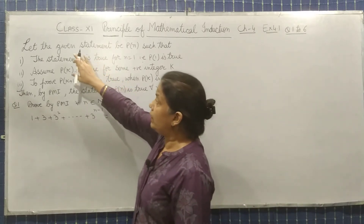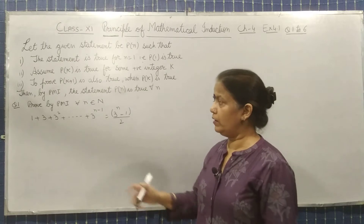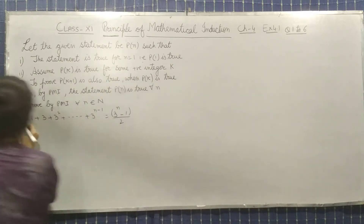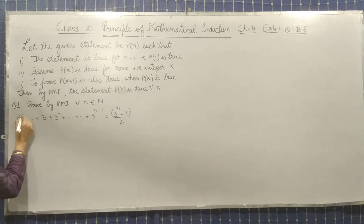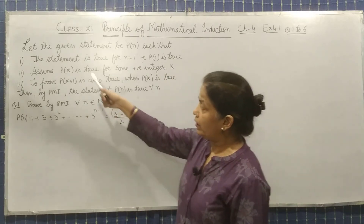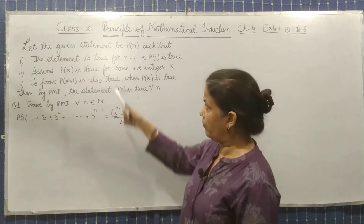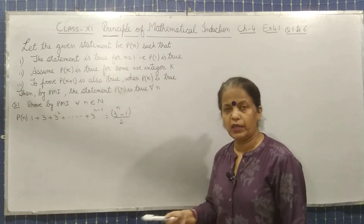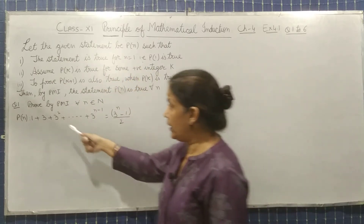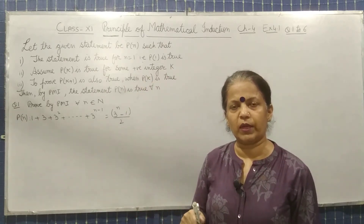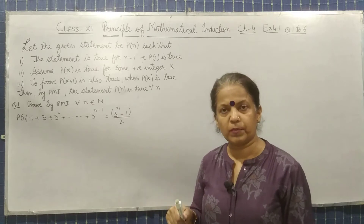Let the given statement be P(N) — whatever the given statement is, you have to assume it as P(N). The first point: you have to show the statement is true for N equal to 1. Instead of N, we will take its value as 1 and check whether it holds true.